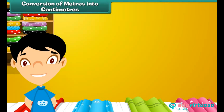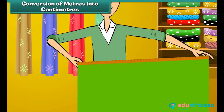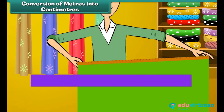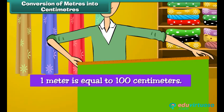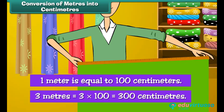It is time to understand the relationship between meters and centimeters. 1 meter is equal to 100 centimeters. For example, 3 meters is equal to 3 into 100, which equals 300 centimeters.